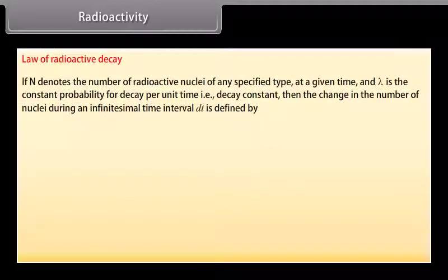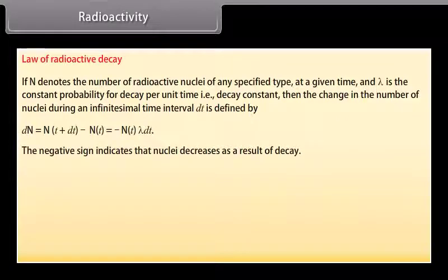Law of radioactive decay. If N denotes the number of radioactive nuclei of any specified type at a given time, and lambda is the constant probability for decay per unit time, that is decay constant, then the change in the number of nuclei during an infinitesimal time interval dt is defined by dN is equal to N(t plus dt) minus N(t), which is equal to minus N(t) lambda dt. The negative sign indicates that nuclei decreases as a result of decay.